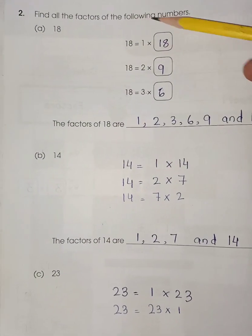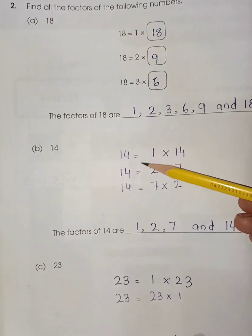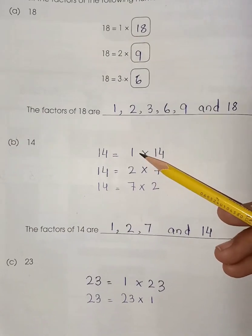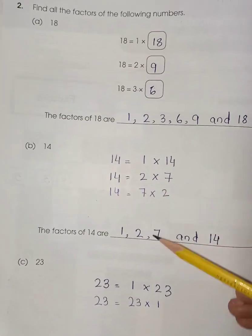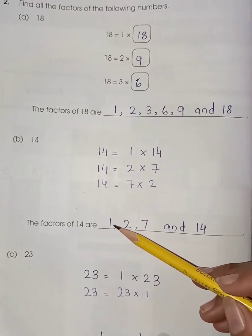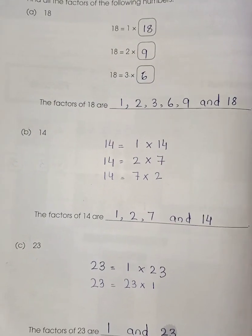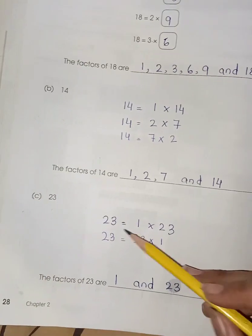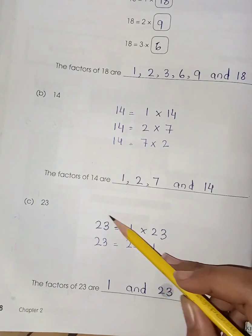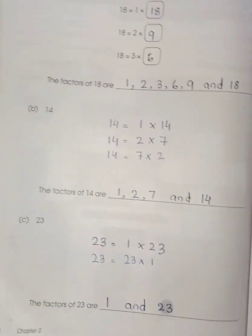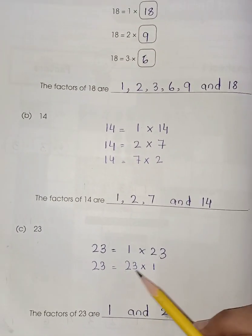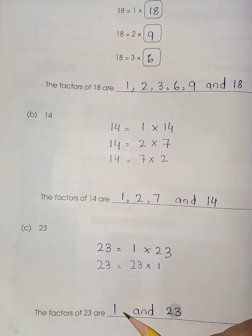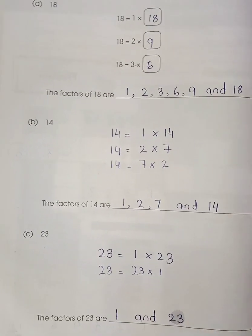Again you have to make the factors in the same form. For 14, 1 multiplied by 14, starting with the smallest number, 2 multiplied by 7. 2 sevens are 14 and 7 twos are also 14. So the factors are 1, 2, 7, 14. Again 23. 23 is an odd number. So when we have odd numbers the factors become less. 1 multiplied by 23 and 23 multiplied by 1. So the factors are 1 and 23.